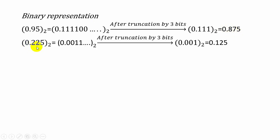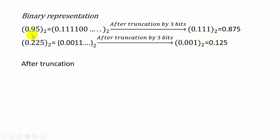The next coefficient is 0.225. The binary equivalent is represented as 0.0011 and so on. Here also we are going to consider only three bits and perform truncation. So when you are taking only the three bits after the binary point, the decimal equivalent can be represented as 0.125. So after truncation, the coefficient 0.95 is changed to 0.875 and 0.225 is changed to 0.125.